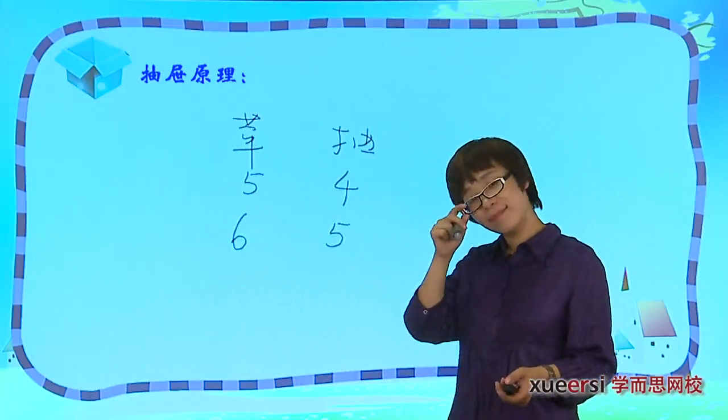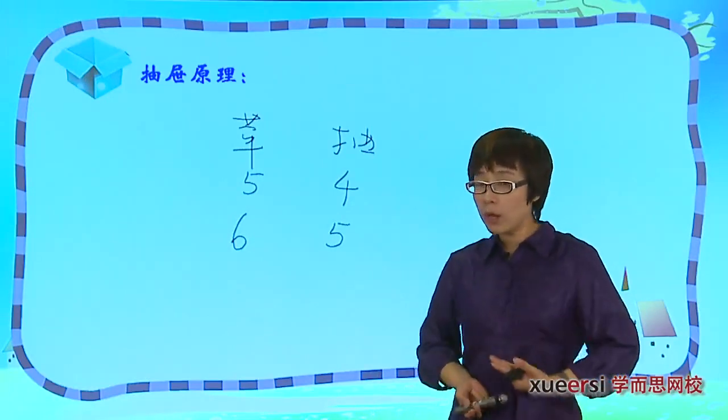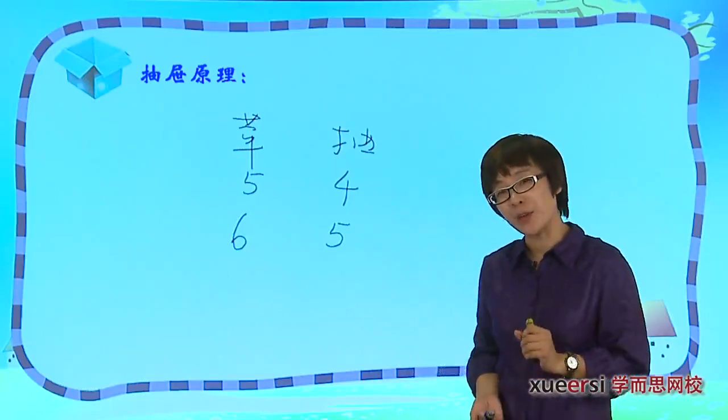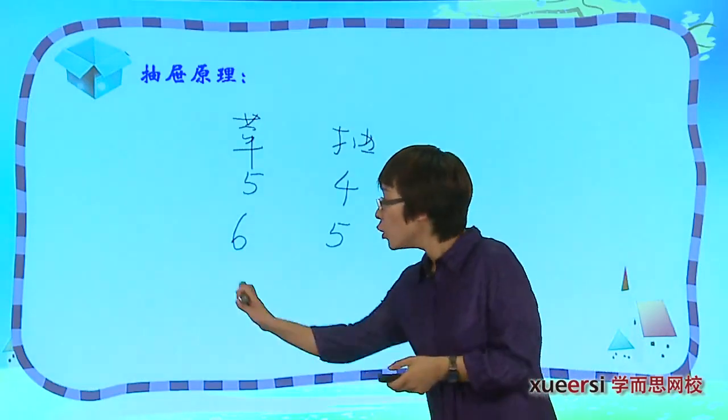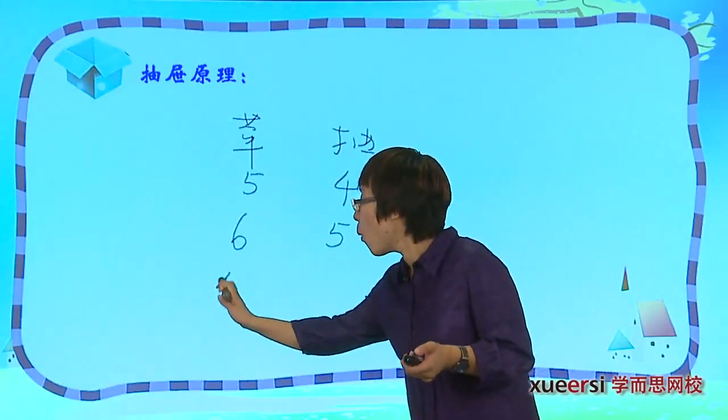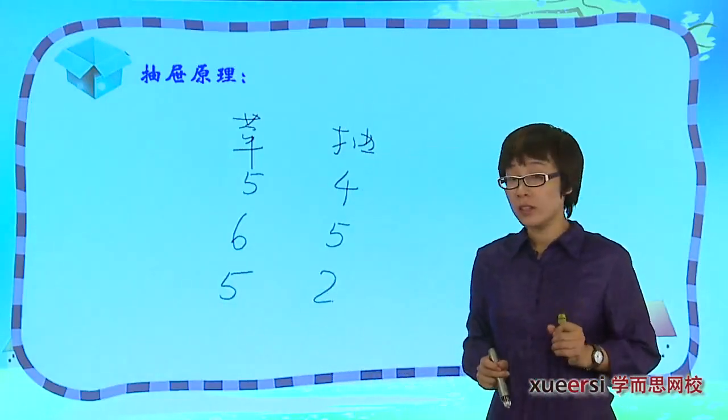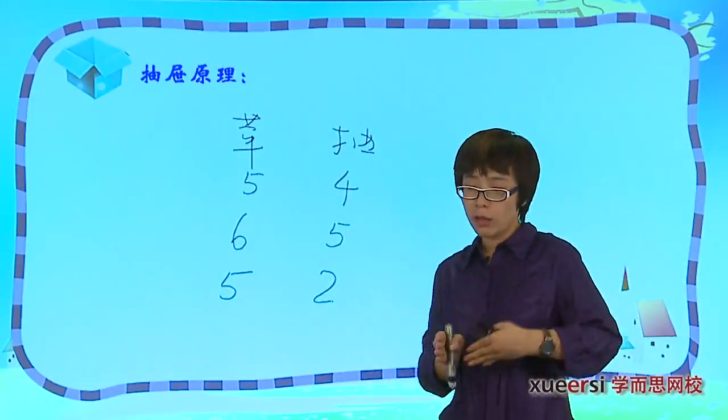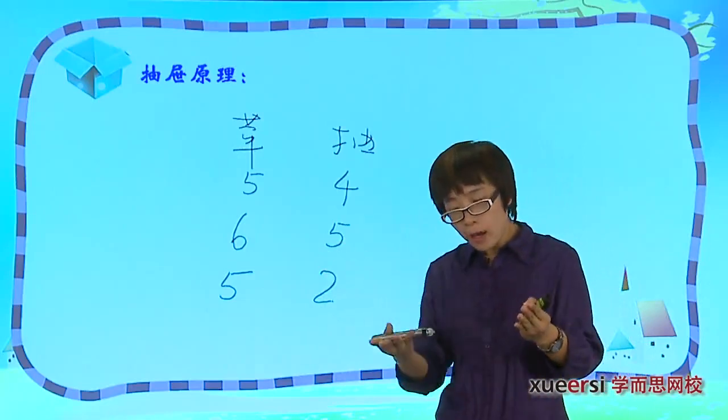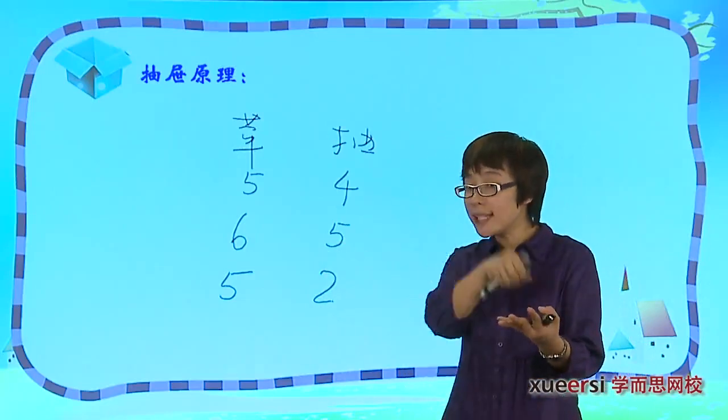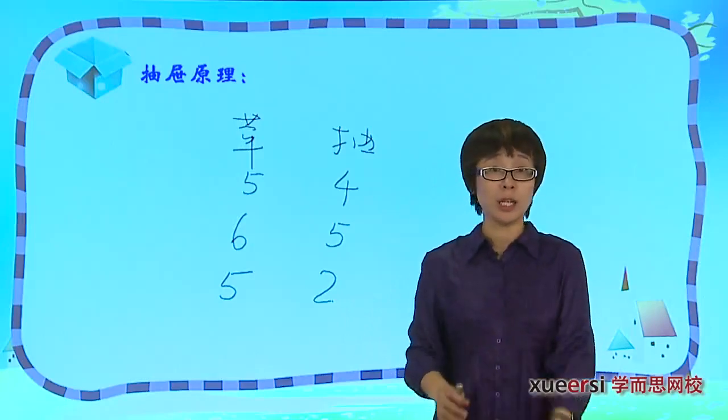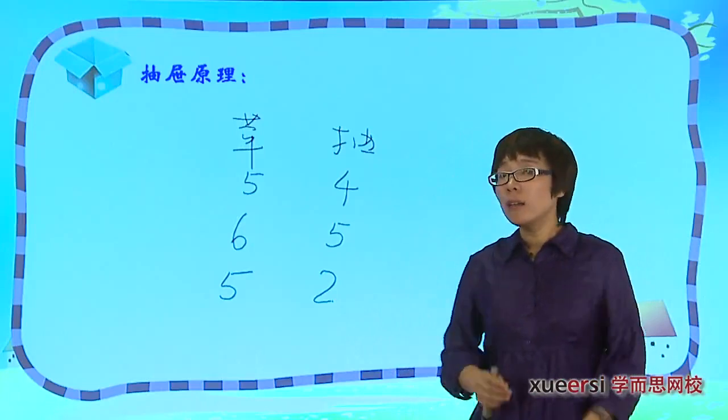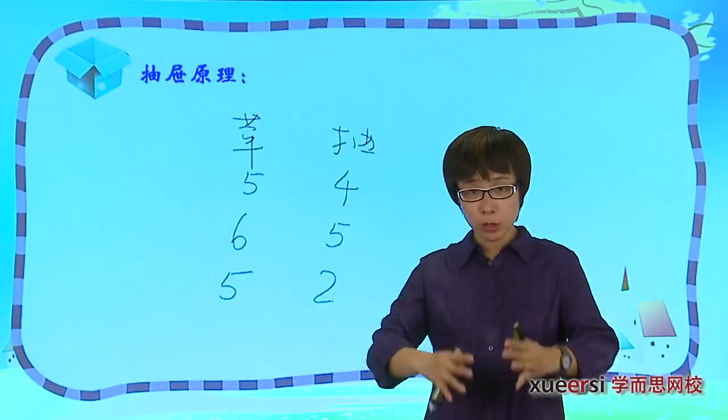那如果是六个苹果五个抽屉呢？一样的。七个苹果六个抽屉呢？也一样的。同学们，稍稍有一点点难度了。如果这是五个苹果两个抽屉，你又能得到什么样的结论呢？五个苹果两个抽屉，放放放放，还多一个，这一个无论进到哪儿，那个抽屉里都会有三个。通过这个，你能不能把它总结出一个算法来呢？